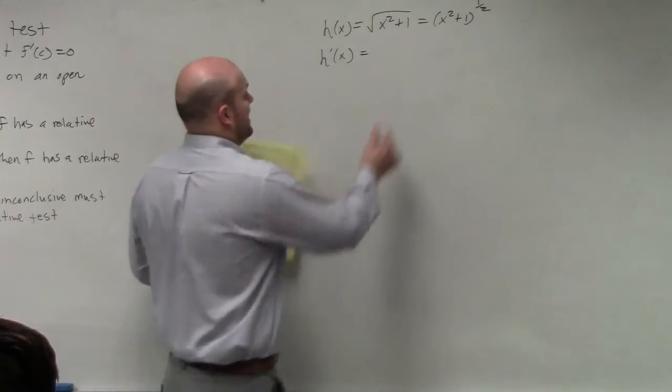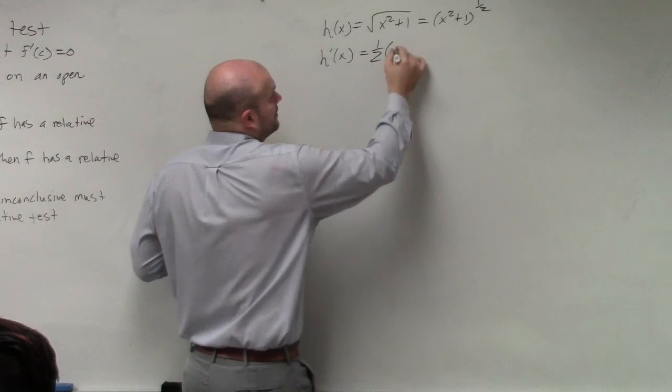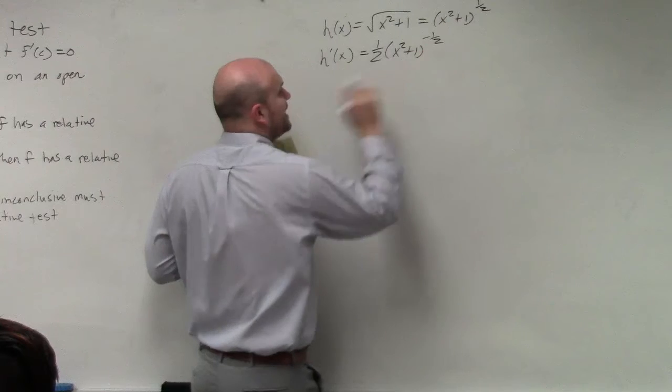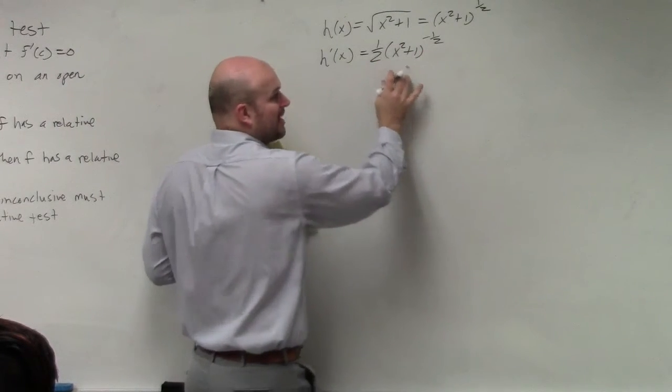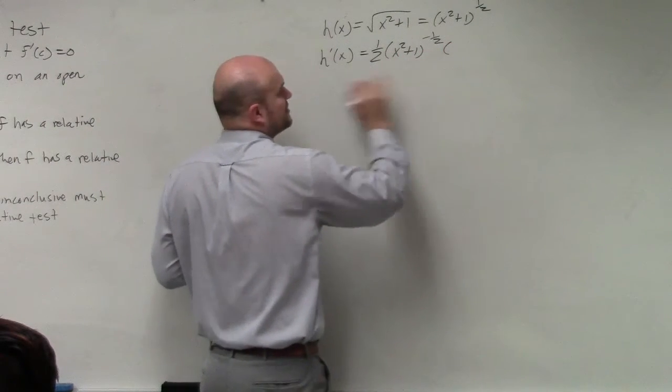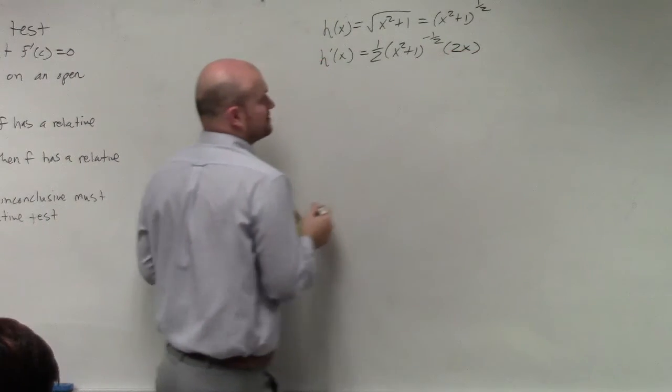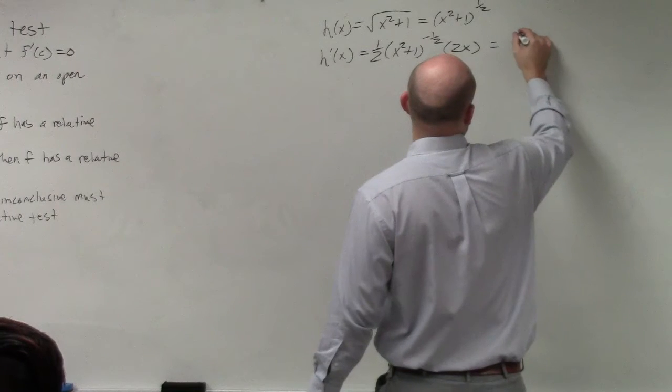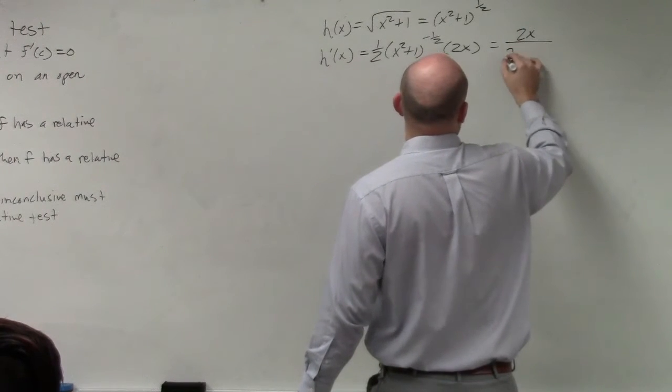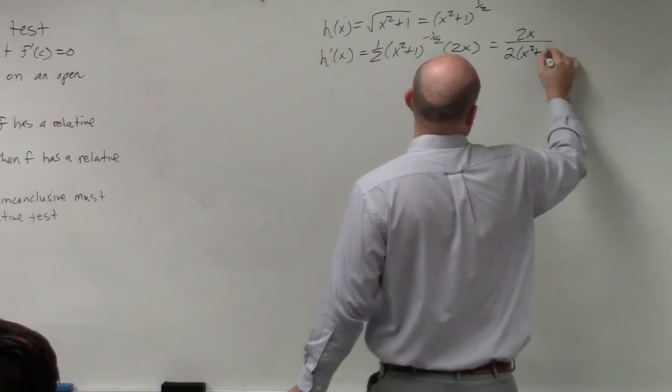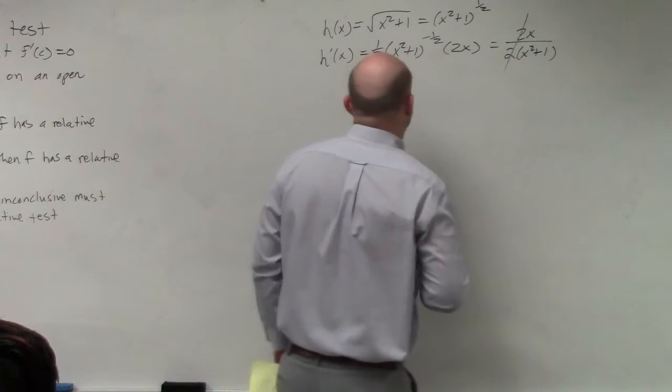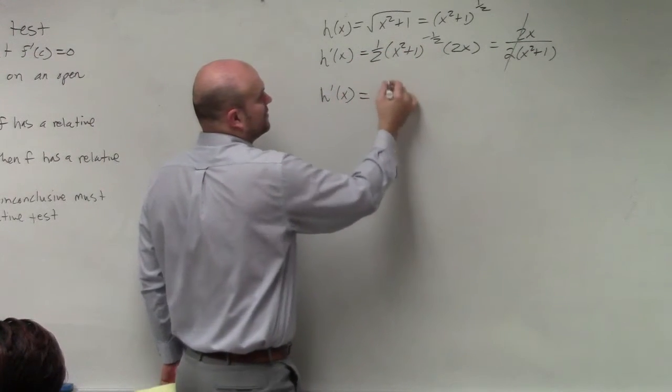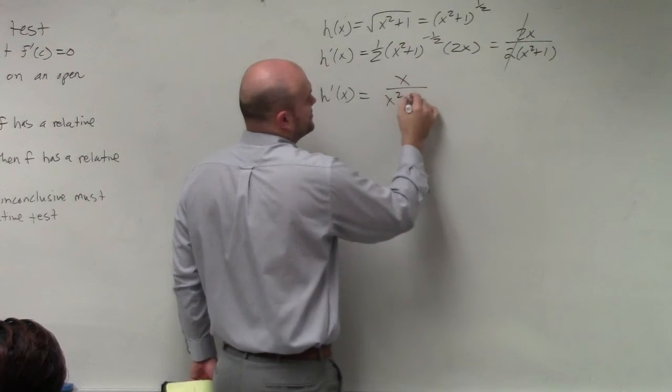So I'm going to bring down the 1/2 in front, x squared plus 1, I'm going to subtract, so that's going to be a negative 1/2. However, I have to apply the chain rule here, so I have to multiply it by the derivative of the inside, which is going to give me 2x. That can then be simplified to 2x over 2 times x squared plus 1, where those divide out. So we have h'(x) equals x over x squared plus 1.